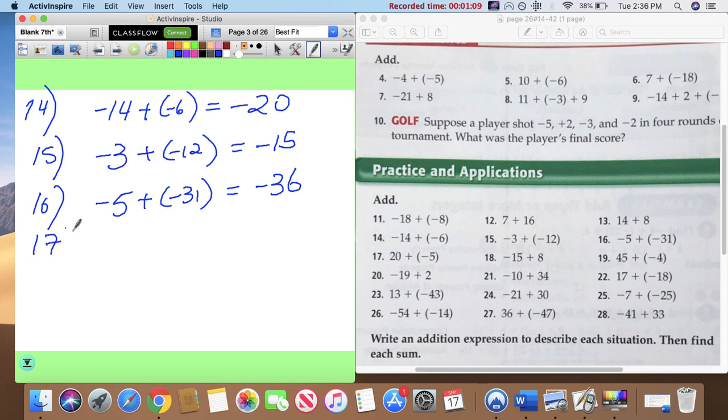Problem 17: 20 plus negative 5. That's a different story. Donde hay más? Hay más positivo, so my answer is going to be positive. ¿Cuántos más? 15 more.